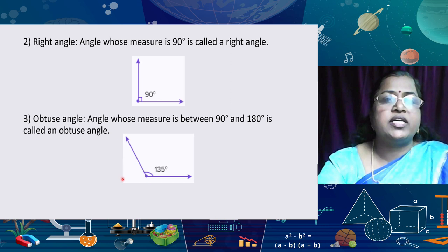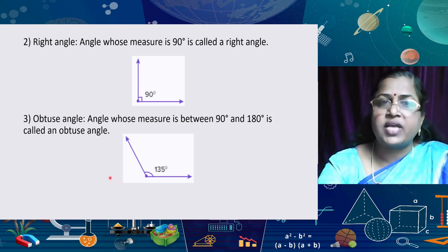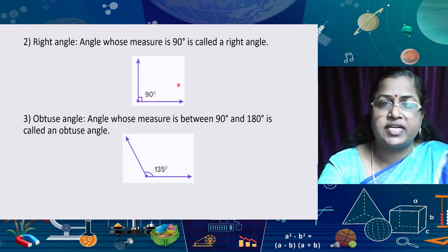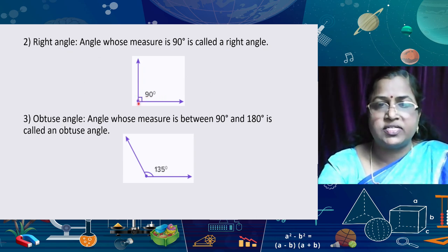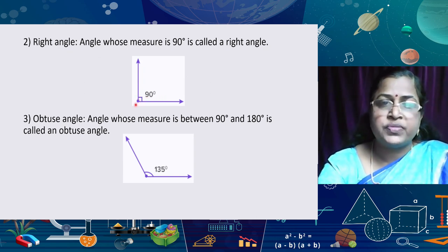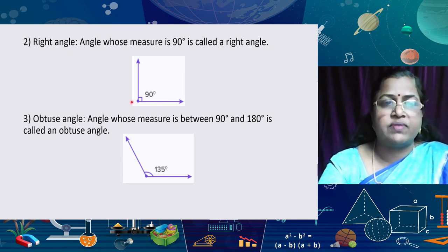Then, right angles — already studied. An angle whose measure is 90 degrees is called a right angle. Here we can see the rays are perpendicular to each other, so the measure is 90 degrees, which is a right angle.